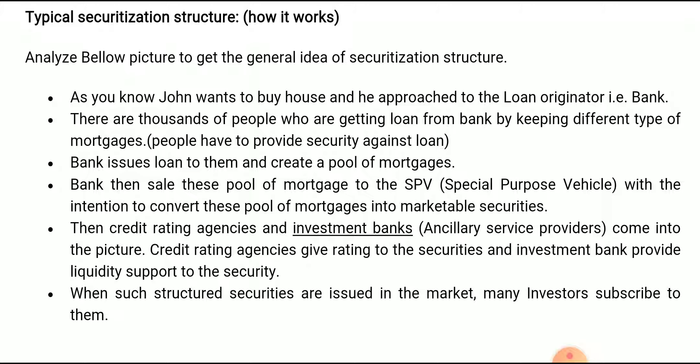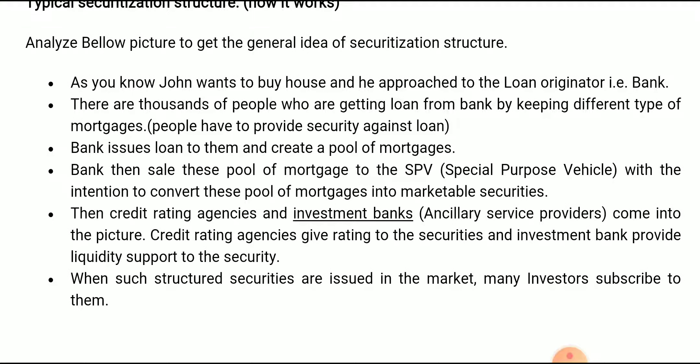For example, Johan wants to buy a house and approaches the bank (loan originator) for a loan. When there are thousands of borrowers continuously increasing, the bank cannot provide loans to each and every person. The number of defaulters is also increasing, so the bank demands security from borrowers — house documents, property documents, legal documents, title deeds — which are submitted to the bank, and in return the bank provides the loan. The bank then issues loans and creates a pool of mortgages.